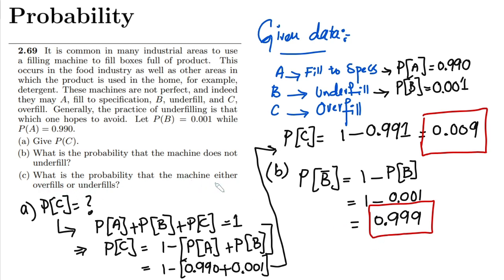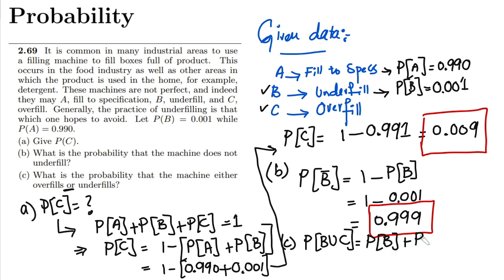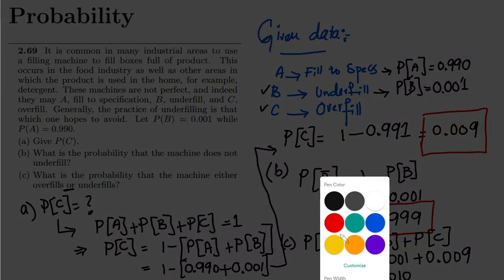For part c, what is the probability that the machine either overfills or underfills? Wherever we see 'or', we use the union notation. So probability of b union c equals probability of b plus probability of c. Probability of b is 0.001 and probability of c is 0.009. Adding them together we get 0.010.